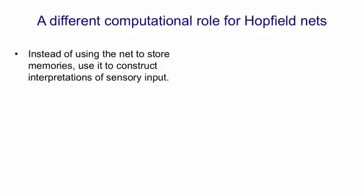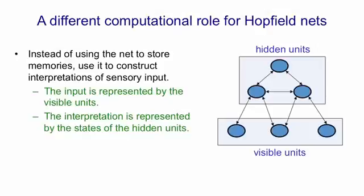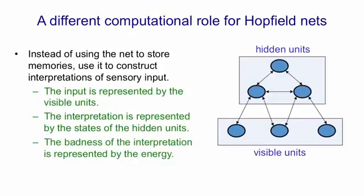Instead of using the net to store memories, we can use it to construct interpretations of the sensory input. So the idea is that we have the input represented by some visible units, and we construct an interpretation of that input in the set of hidden units. So the interpretation, or explanation of the input, is going to be a binary configuration over the hidden units. The energy of the whole system will represent the badness of that interpretation. So to get good interpretations according to our current model of the world, which is in the energy function, we need to find low energy states of the hidden units, given the input represented by the visible units.